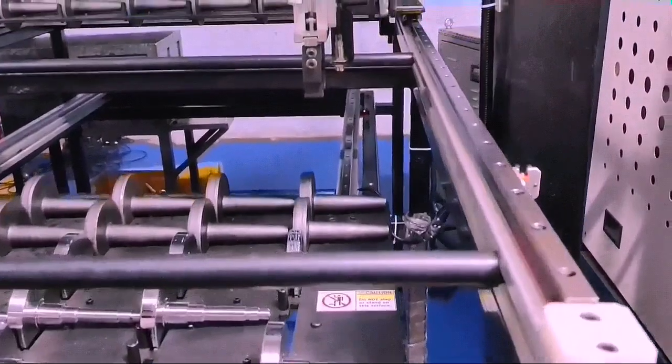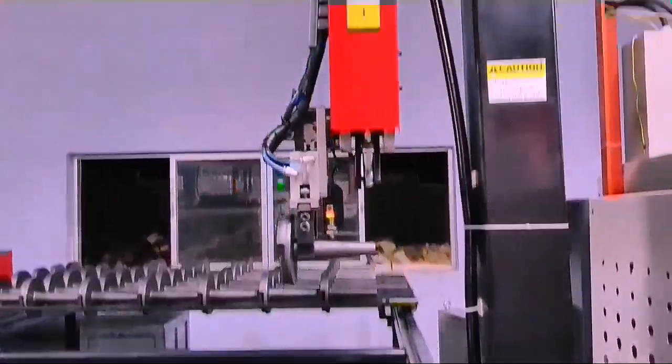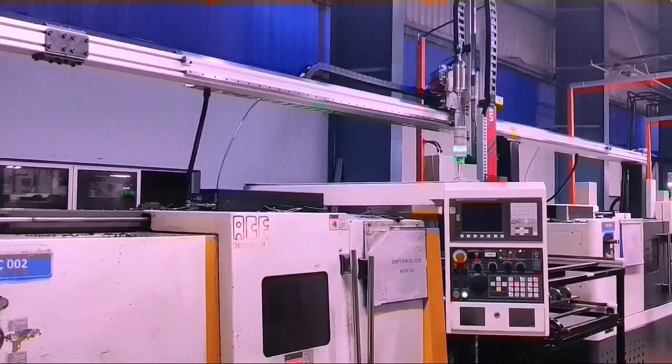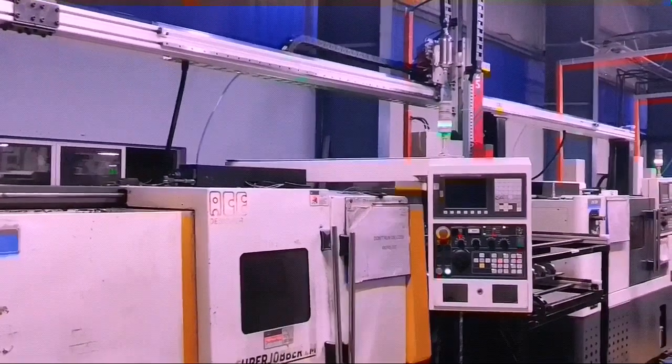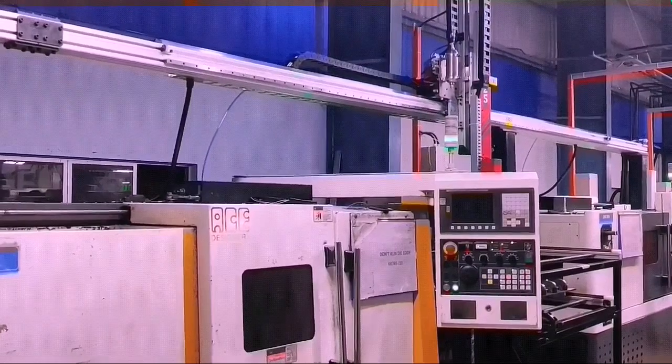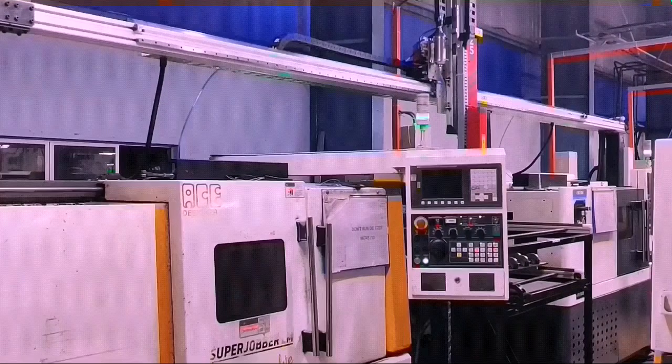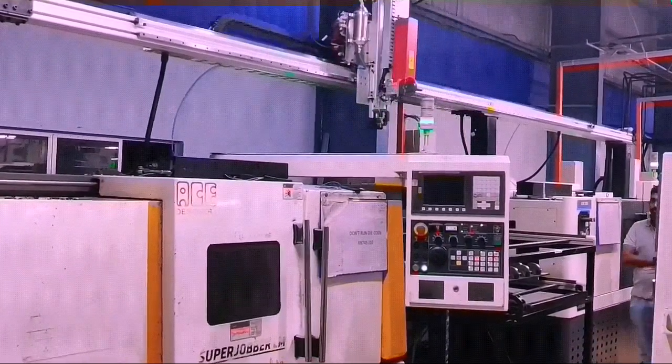Components placed in a tray are the safest and easiest way to handle components that are delicate. This method of loading and unloading is preferred by customers who have components that must not touch each other during loading or unloading. If components come in contact with one another in a gravity feed system, the rubbing could cause scratches and mar the surface finish.